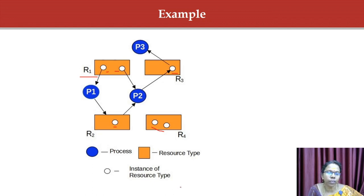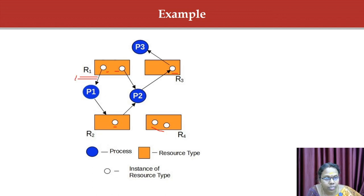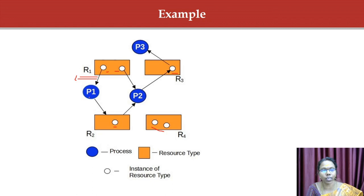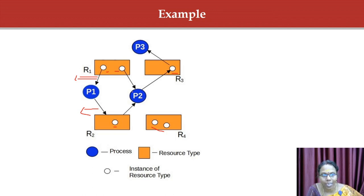Looking at the graph: resource R1 is assigned to P1 — that is an assignment edge. P1 is requesting R2 — that is a request edge. Another instance of R1 is assigned to P2. P2 is requesting R3, but R3 is assigned to P3. Also, R2 is assigned to P2.